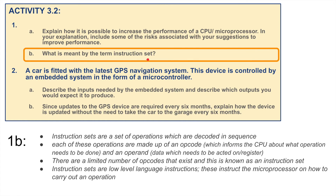What is meant by the term instruction sets? Instruction sets are basically a set of operations which are decoded in sequence. Each of these operations is made up of an opcode, which informs the CPU about what operation needs to be done, and an operand, which is the data which needs to be acted on within the register. There are a limited number of opcodes that exist, and this is known as the instruction set.